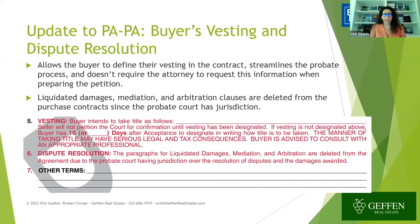The second update is regarding buyer's vesting and dispute resolution — another very important addition. The change adds: 'vesting — buyer intends to take title as follows.' This really simplifies the process because prior to this addition, attorneys, when preparing the petition, always had to reach out to the agent to ask how the buyer is taking title and what the vesting is. Now with the PAPA, the agent should enforce the buyer's agent to specify the vesting in the form, so once you have a fully executed contract, the vesting is clearly stated. This streamlines the probate process and doesn't require the attorney to request that information when preparing the petition.